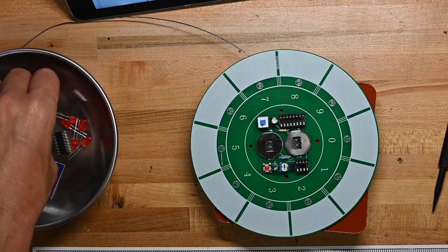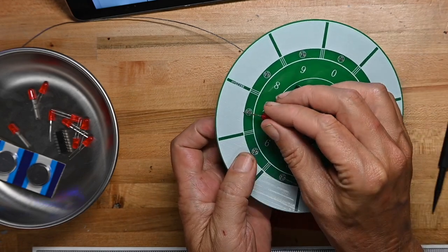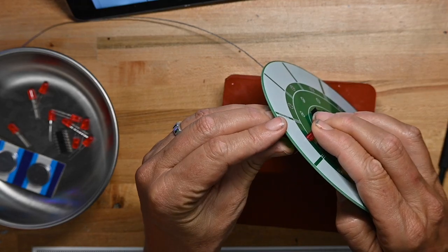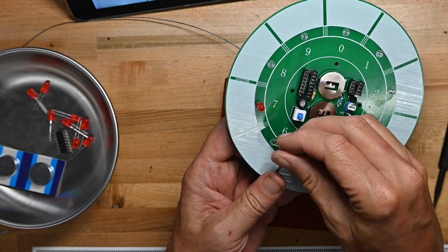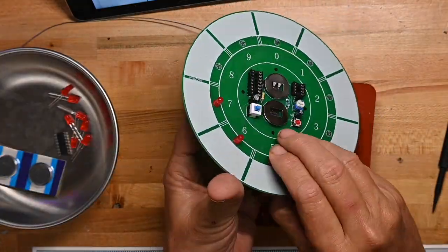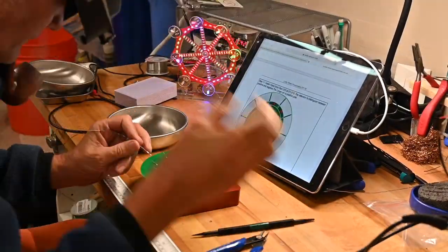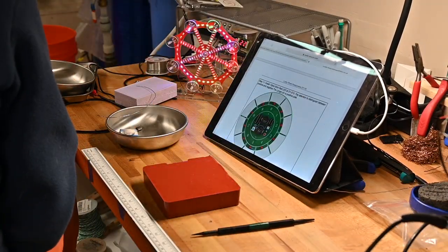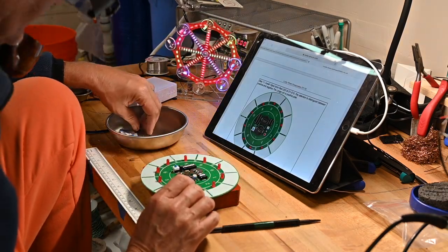Now we'll put all the LEDs on. And again, the positive and negative locations are marked very clearly on the printing on the circuit board. So all you have to do is actually follow it. And that's all the LEDs soldered on.